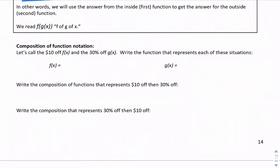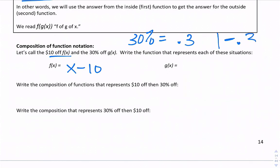Let's call the $10 off f(x) and the 30% off g(x), and write the function for each. Ten dollars off a total would be f(x) = x − 10. For g(x), if it's 30% off, we're not paying 100% — we're paying 70%, so g(x) = 0.7x. Those are the two functions.